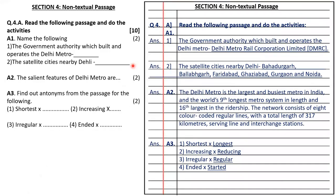Section four is based on a non-textual passage. A passage was given and there are a few questions. The answer for the first question is: the government authority which built and operates the Delhi Metro is Delhi Metro Rail Corporation Limited, that is DMRC.